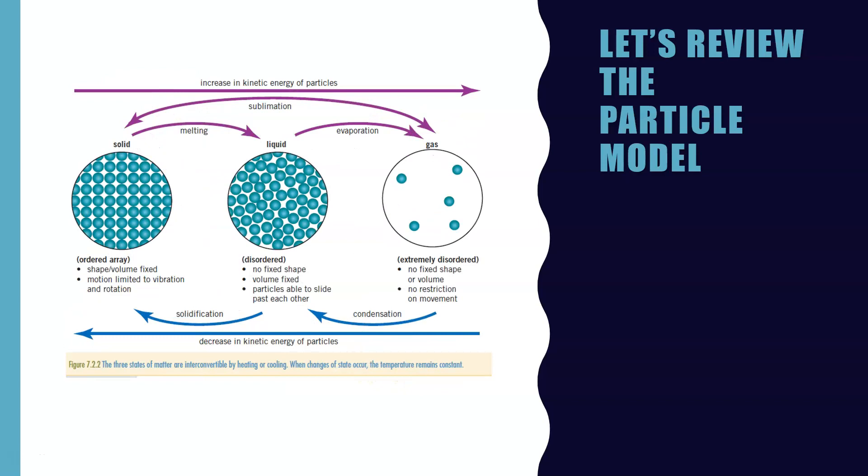So let's review what you already know about particles. Back in year eight you would have looked at the particle theory. You would have looked at how solids had nice uniformly arranged particles that only vibrated, the particles didn't move around. Then a liquid that lost that uniform structure as such, they're still quite closely packed but they can move past each other. And then our gas where there's no fixed shape, those particles fly randomly around. And you would have learned the names of the changes in state.